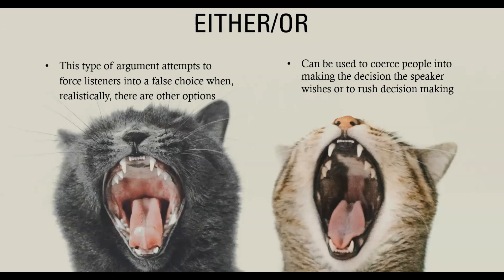The either-or fallacy is a type of argument that attempts to force listeners into a false choice, when realistically there are other options. This can be used to coerce people into making the decision the speaker wishes to, or to rush their decision making.